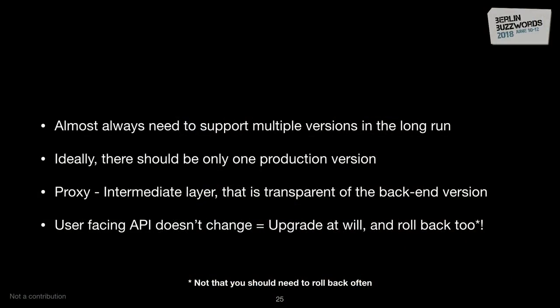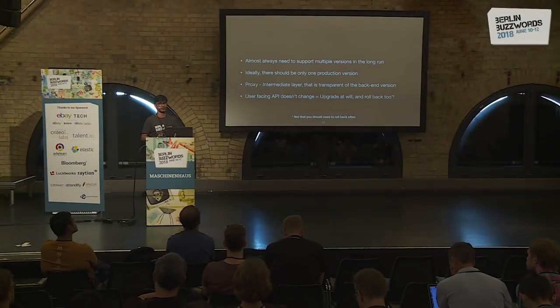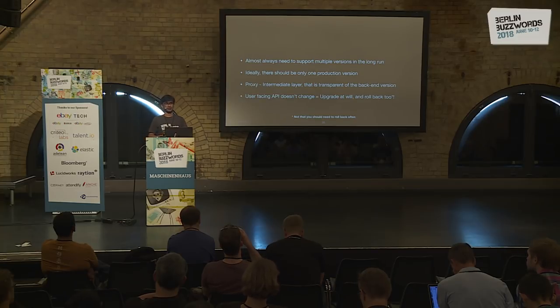Another useful practice: when you build your client, add a version to it and log the version of client requests that come in. When you want to deprecate or remove support for something, you can check your logs and see that for the last three months nobody has used the older client version — that's a safe point to stop supporting two or three versions in the proxy layer. It makes it much easier to figure out when it's a good time to move on.